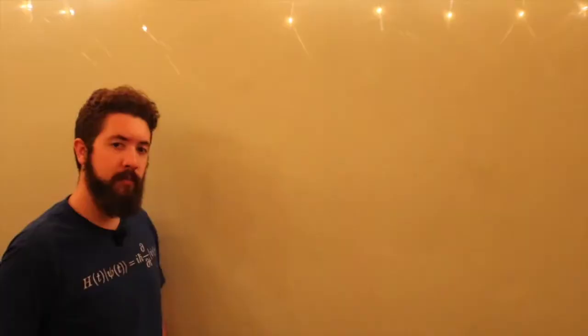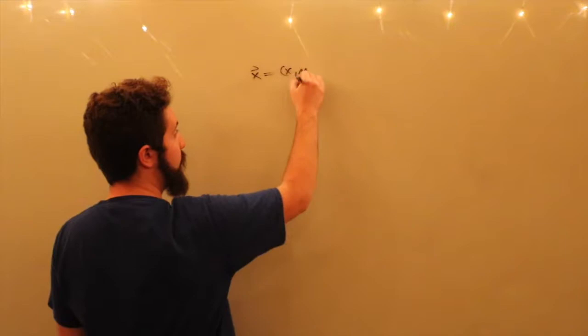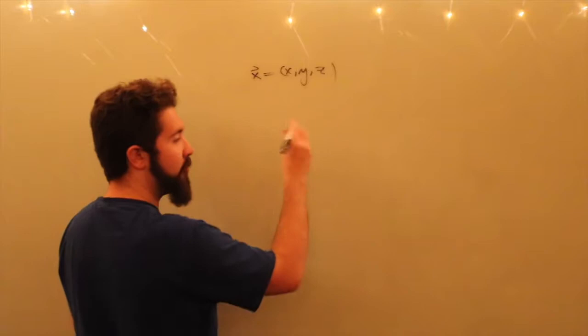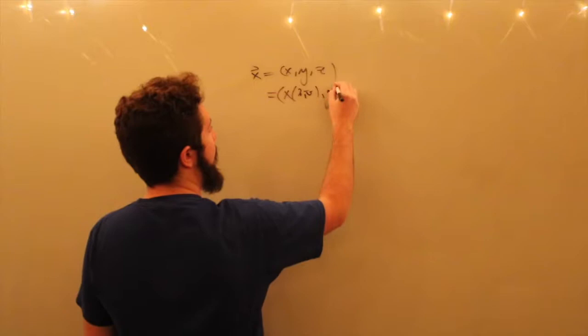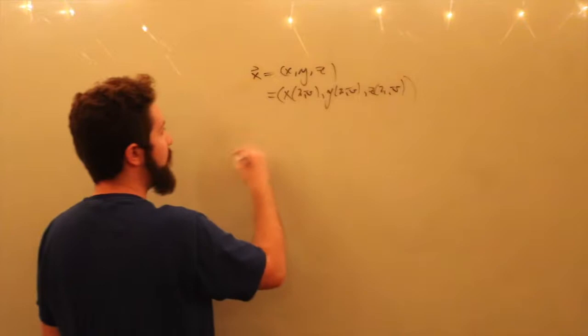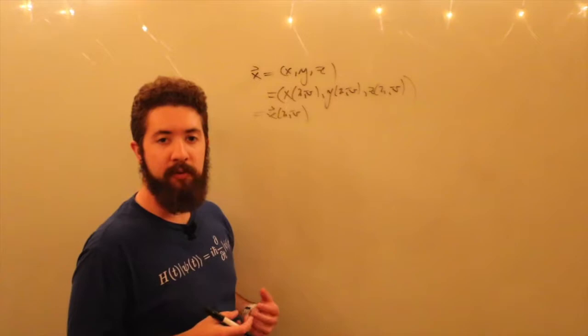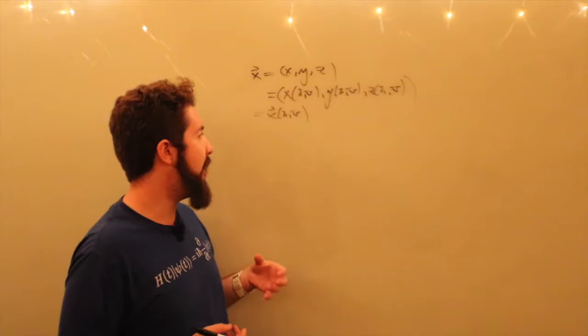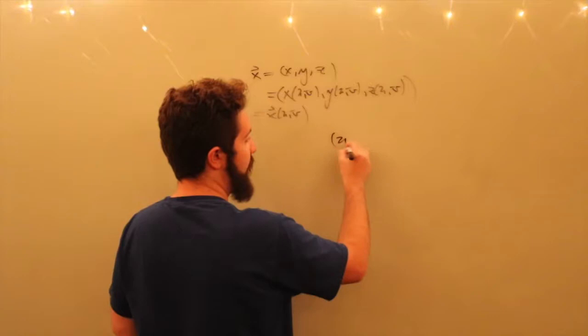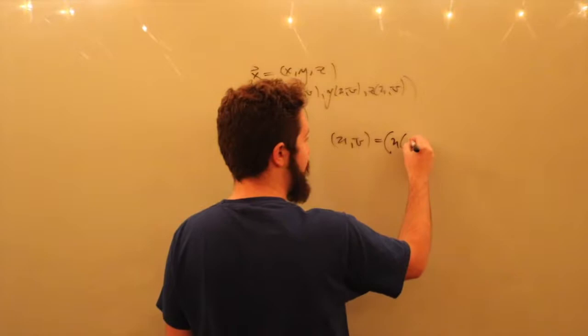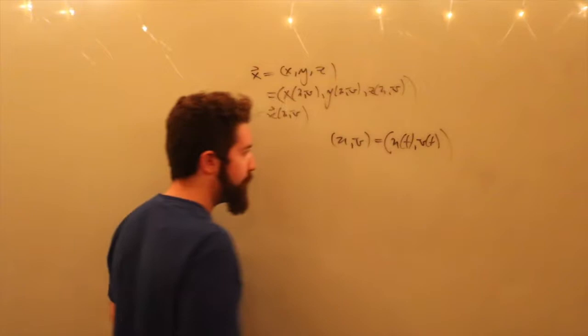Now suppose x = (x, y, z) is a function of two variables, parameterized by two parameters u and v, so this is x(u,v), y(u,v), and z(u,v) — or just x(u,v). This defines a surface when we give u and v a certain domain. We're interested in minimizing the length of a path on that surface, so u and v are both functions of a single independent parameter t: u = u(t) and v = v(t).